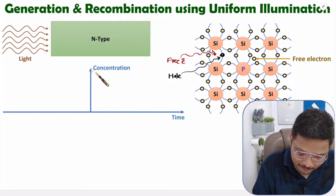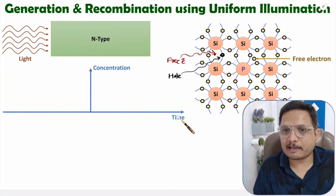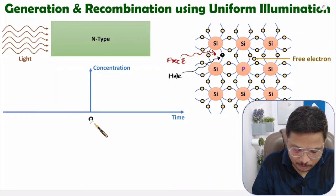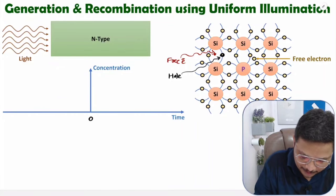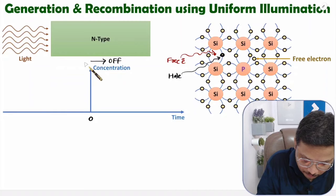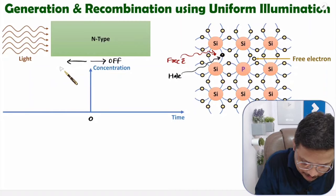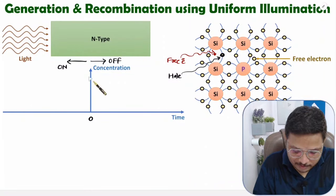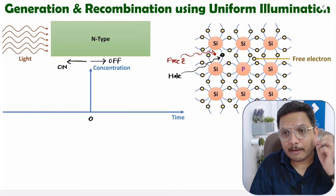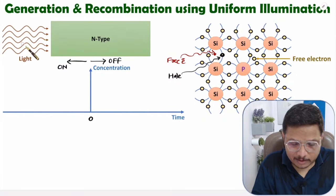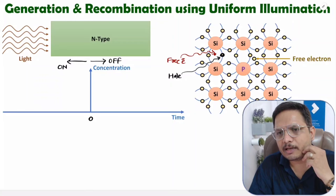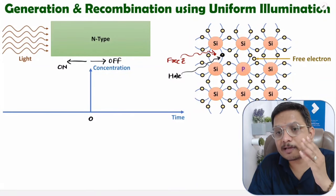Now I will explain the basic calculation of how generation and recombination take place due to uniform illumination. On the vertical axis I am considering concentration and on the horizontal axis I will consider time. At time t equals zero we switch off the light — so before t equals zero light is on, and after t equals zero light is off.